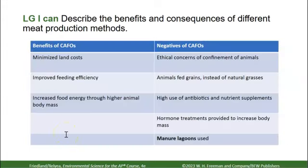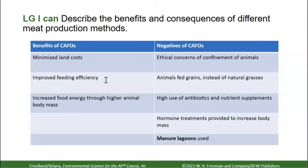There are some benefits and negatives to CAFOs. Benefits include minimized land cost — you don't need as much land if you crowd them all together — improved feeding efficiency, and increased food energy through higher body mass. On the negative side, there are ethical concerns; it is somewhat cruel, especially to pigs and chickens.